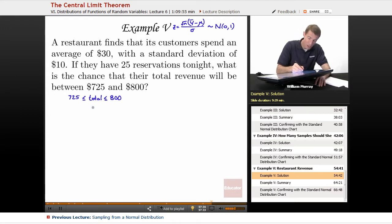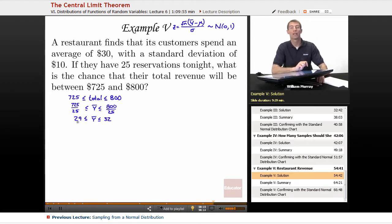So the mean, the average, Y bar would have to be between $725 divided by how many customers were there, 25, and $800 over 25. Because that's how much the average customer would have to spend in order to get the total between $725 and $800. And I just did a little arithmetic here. I rigged this up so that the numbers came out fairly nicely. $800 over 25 is $32. And $725 over 25, $700 over 25 is $28. So $725 over 25 is $29.